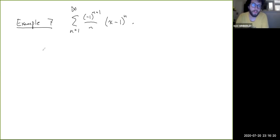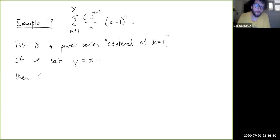Okay, so this is a power series centered at x equals 1, okay, because if you set y equals x minus 1, just sort of do a change of variable, like all we've done really is just translate all the values of x over by some constant amount, right? Then this is the sum of negative 1 to the n plus 1 over n of y to the n.